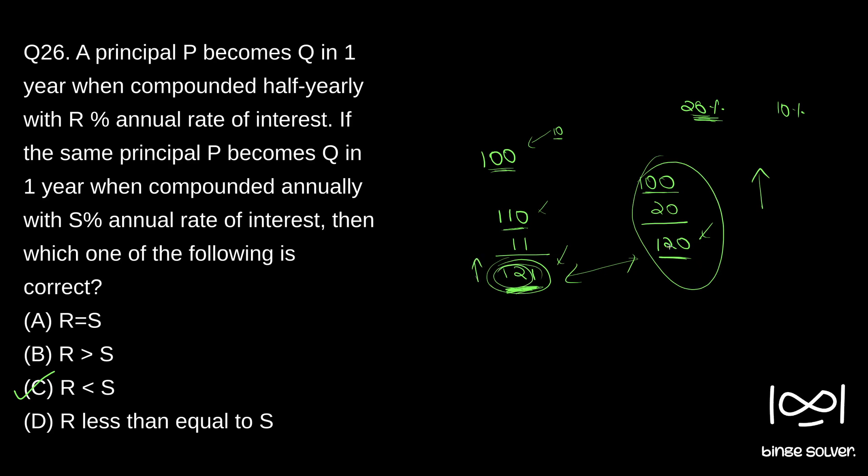So for these values to match, this interest rate has to be higher. So that means S percentage has to be higher than R percentage, which is the half-yearly case. I hope you understood what it means to compound half-yearly with an R percentage interest rate, and what it means to compound annually with S percentage interest rate. These two are the different cases I explained.